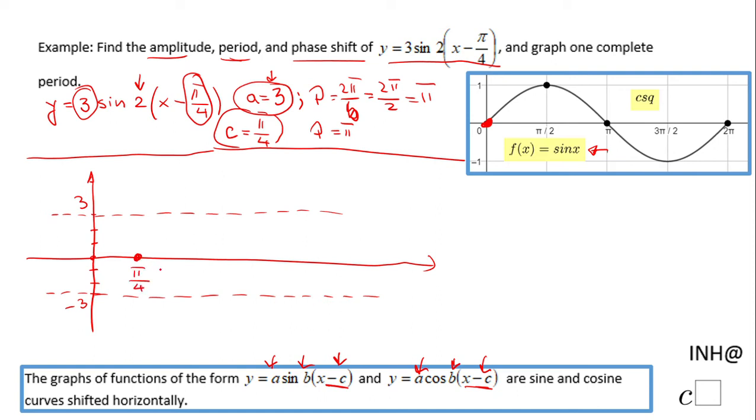I need to find where this will be back in the same position, which is after one period of π. I'll add π/4 plus 4π/4 to get 5π/4. That's this point here.